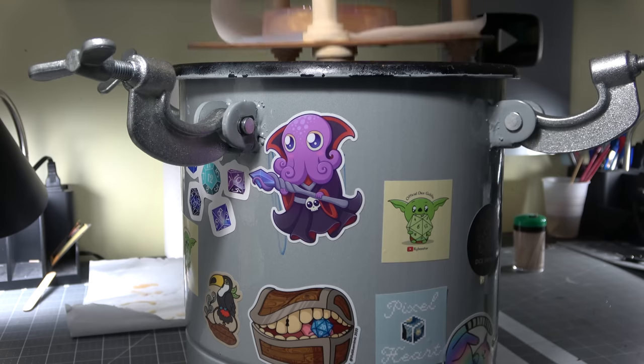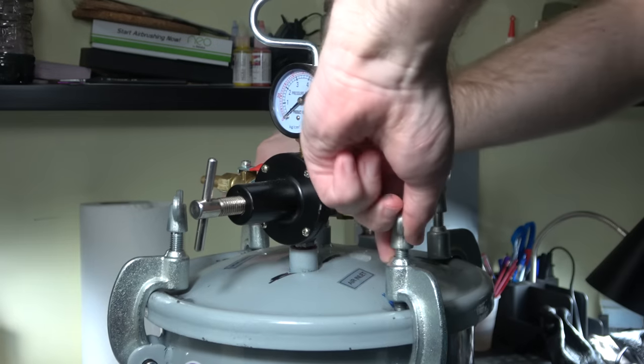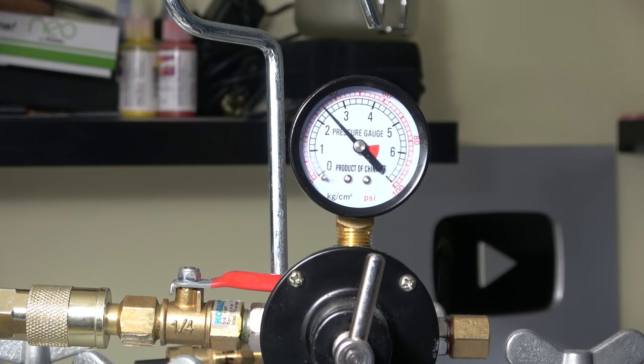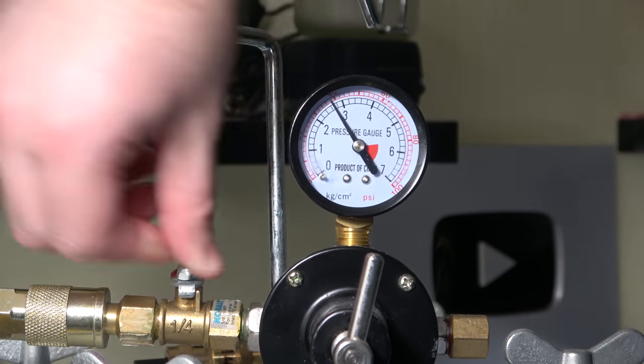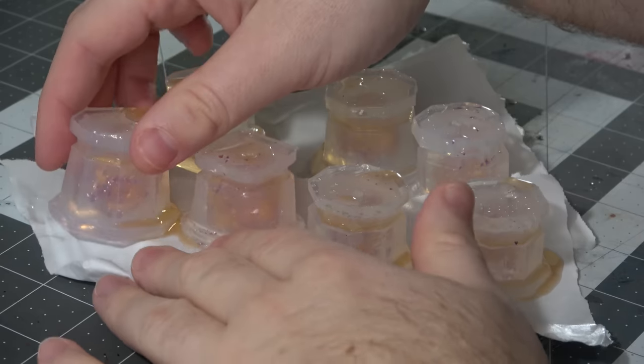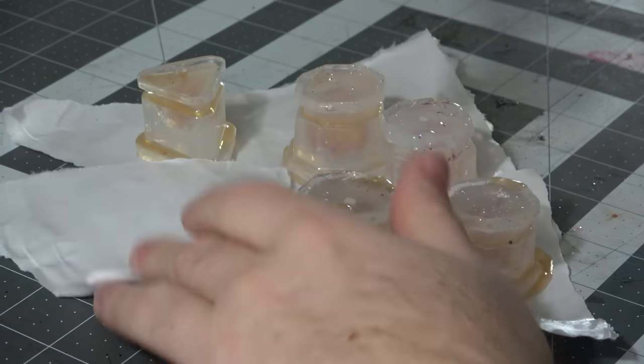After the lids or caps are on the molds, I'm gonna go ahead and put the resin inside of a pressure pot for the resin to cure in. You don't need to do this, it just helps reduce bubbles and gives me transparent dice. I'm gonna put it at 40 psi and leave it in there for 24 hours, which is twice the cure time of this specific resin, so they are definitely cured.